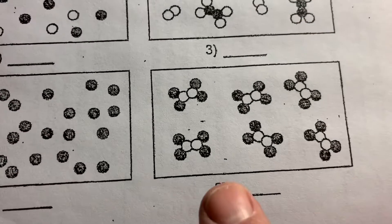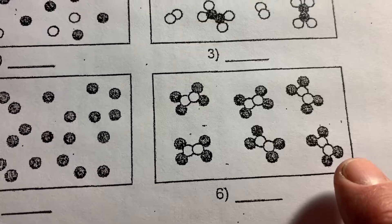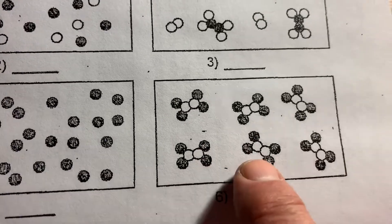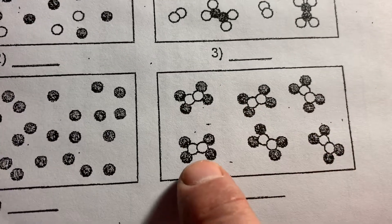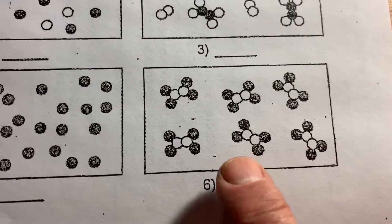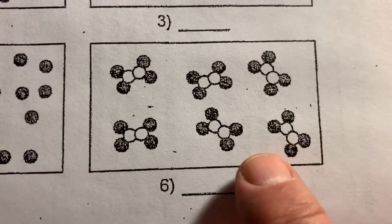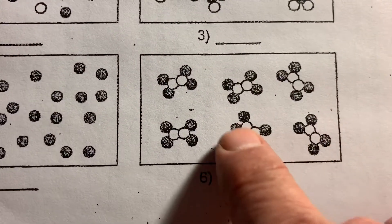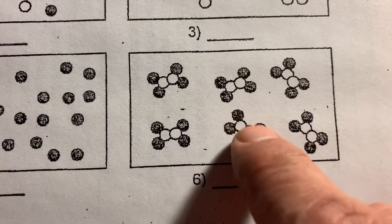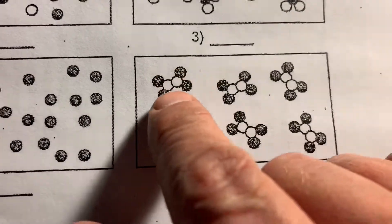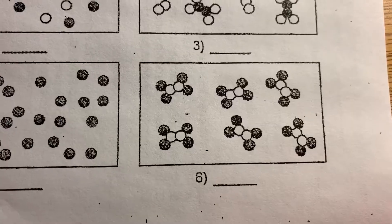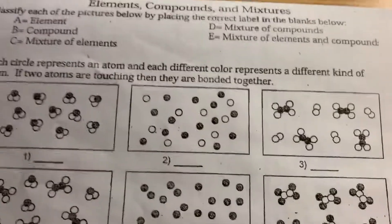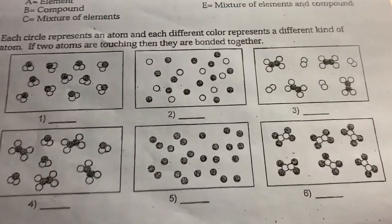In our last example, you can sort of figure this one out. You see these are all alike — therefore, whatever this is, it's a pure substance. Now the question is, is it an element or is it a compound? Well, if you look here, they're not all the same kind of atoms in these molecules — therefore, this is not an element. There are actually two elements in this. But they're bonded together in a molecule, and this molecule behaves the same way. So I often think of the analogy of words.